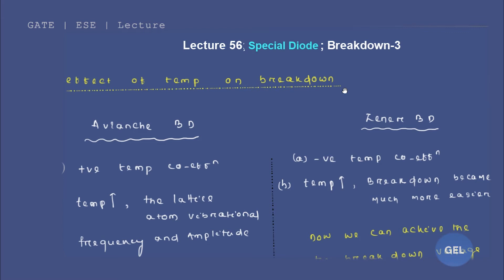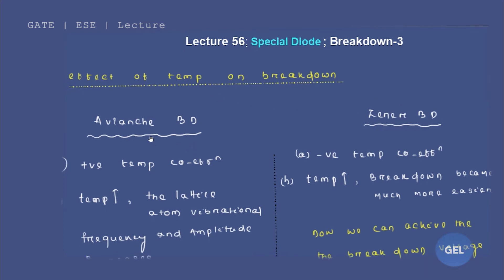This is one of the most interesting topics, so listen carefully. If you vary the temperature, how does it affect avalanche breakdown and Zener breakdown? If you increase the temperature, the resistance of the avalanche diode increases — that is why it has a positive temperature coefficient. But in the case of Zener breakdown, it has a negative temperature coefficient.